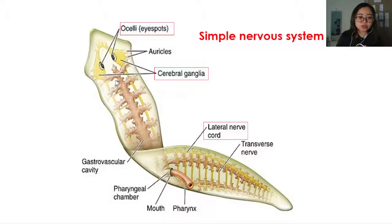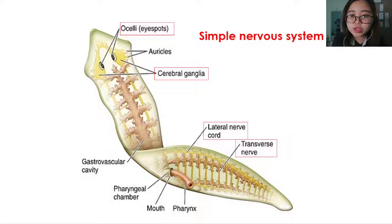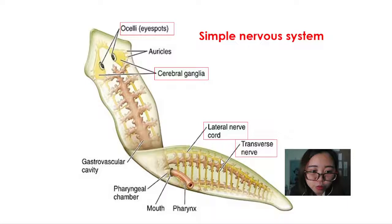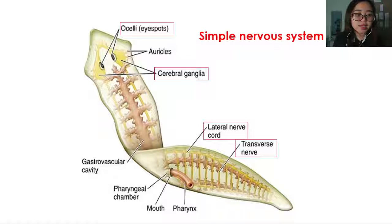You also notice that planaria has lateral nerve cords — running from the cerebral ganglia downward to the end of the body on both the left and right sides. They also have transverse nerves connecting the left and right lateral nerve cords. Looking at the diagram, from this lateral nerve cord to the other, the yellow part represents the transverse nerves. That is the simple nervous system of Platyhelminthes.